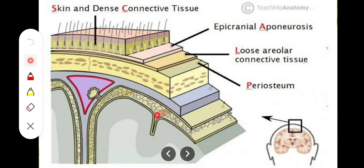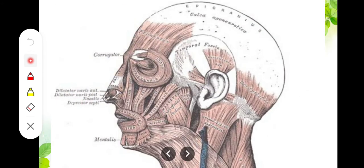The second layer is the subcutaneous tissue, present below the skin. It contains mostly blood vessels. This superficial fascia beneath the skin binds the skin to the underlying galea aponeurotica. So the contents of the subcutaneous tissue are blood vessels. The third layer is the occipitofrontalis muscle.